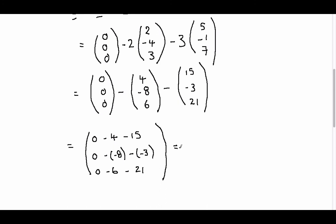So working all of these out, we have minus 4, minus 15, which is minus 19. We have minus minus 8, so that's plus 8. Minus minus 3, so that's plus 3, so we have 8 plus 3, which is 11. We have minus 6, minus 21, which is minus 27.